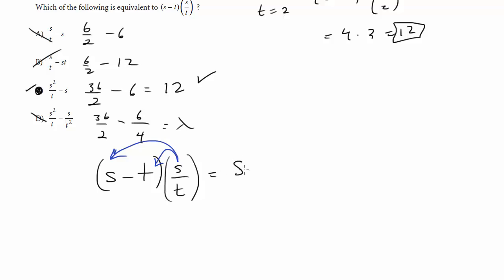So it's really going to be s times s over t minus t times s over t. We'll do a little canceling so this just combines to become s squared over t. Here the t's cancel so we're just left with s, and so we get s squared over t minus s and that is again choice c.